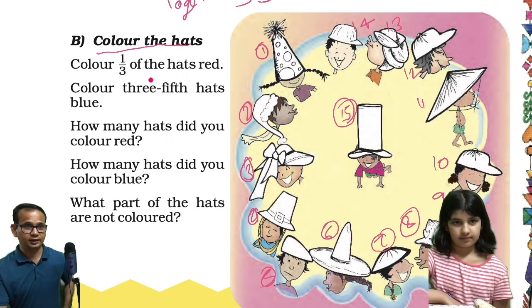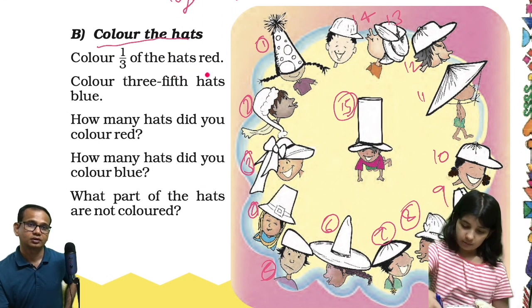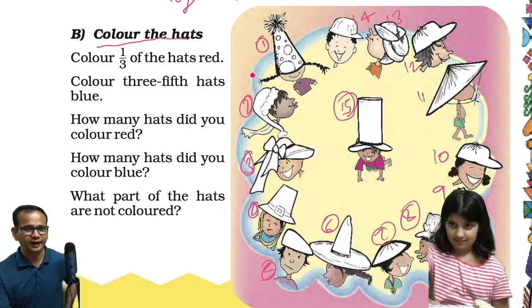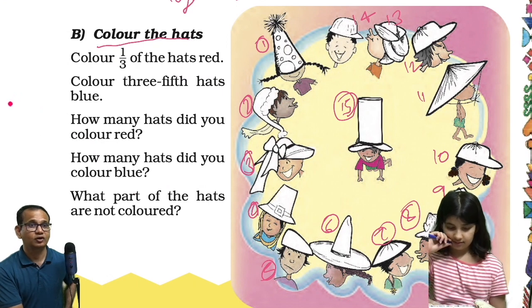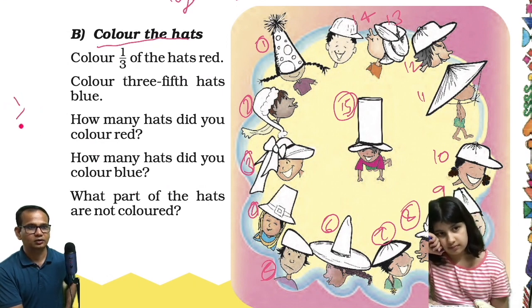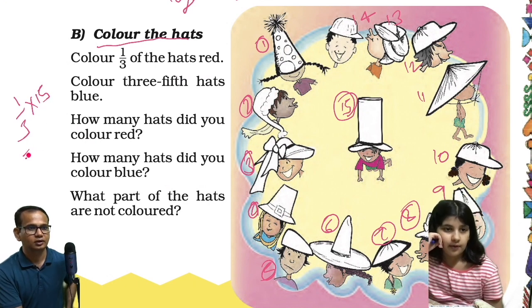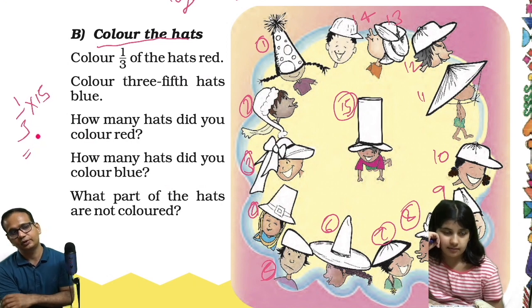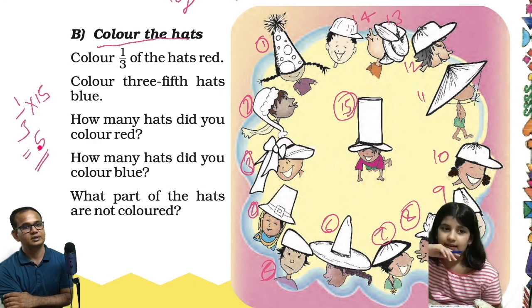So color one third of the hats red. How many will you have to color? One third of the hats — this is one third — and total how many hats are there? 15. So total is 15 divided by 3. That gives us 5. So you have to color five hats.